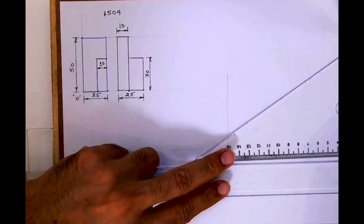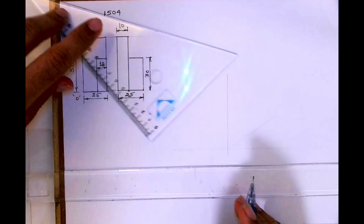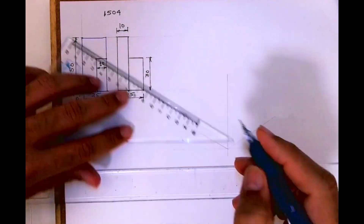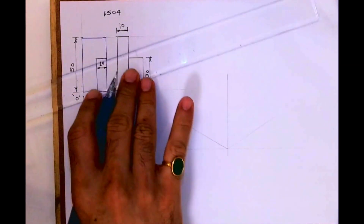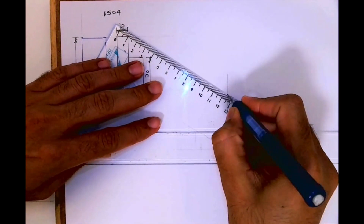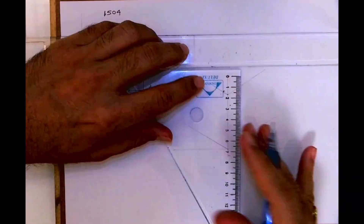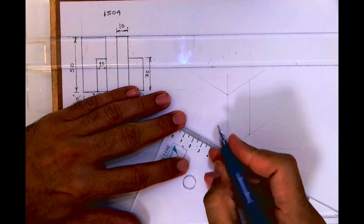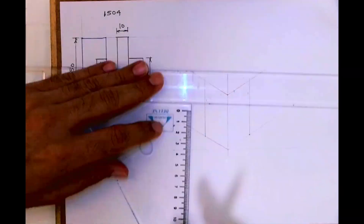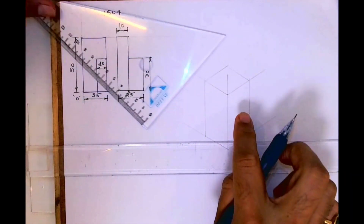This is 25, so I will take 25 on the right hand side and 25 on the left hand side. Height is 50. I need to mark length, width, and height and draw a box. I have taken 25-25 on both sides and I am drawing the vertical line. This way we have completed the box.